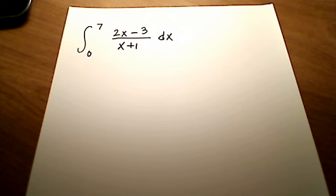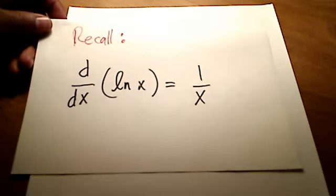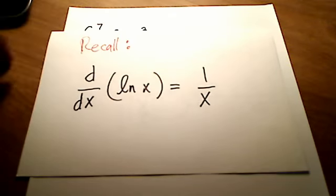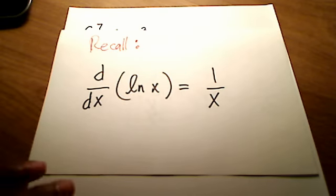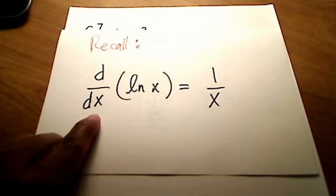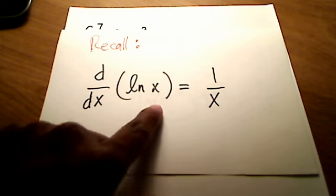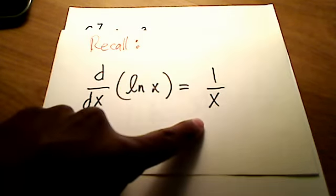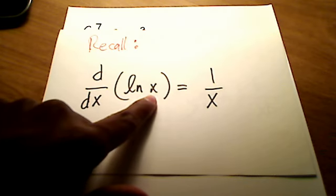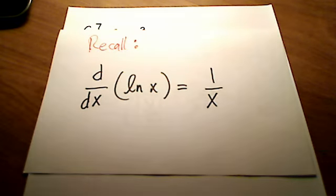I'm going to use integration by substitution. You should remember and recall that the derivative of the natural log of x is equal to 1 over x, and we're assuming that x is a positive number.